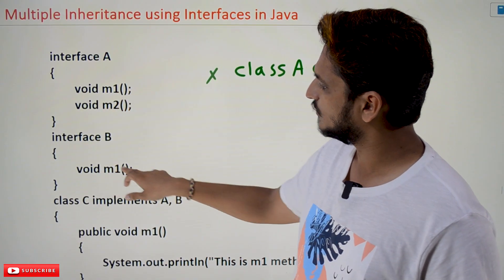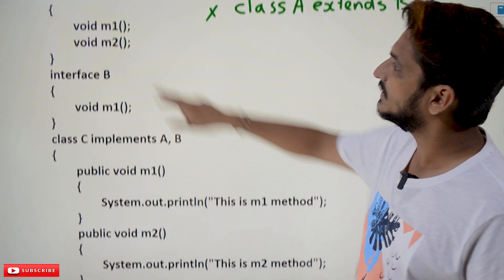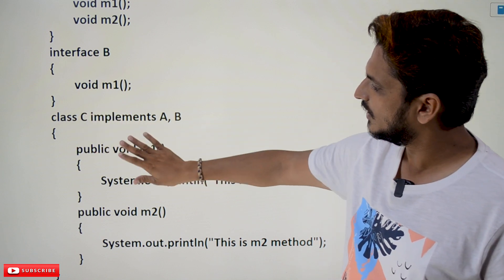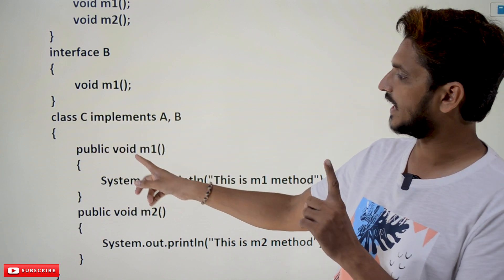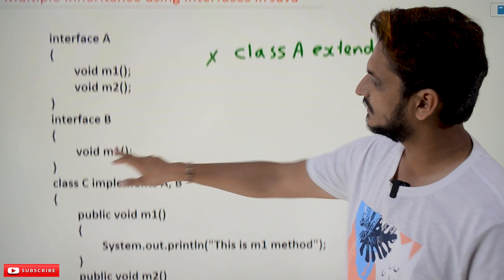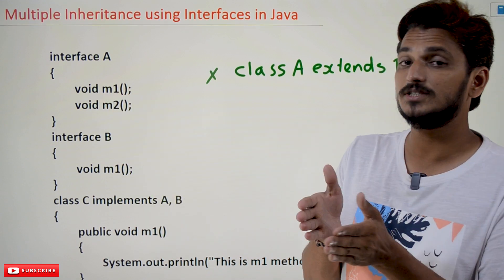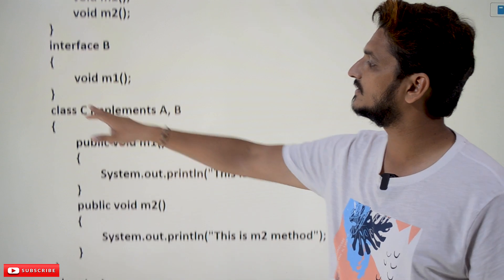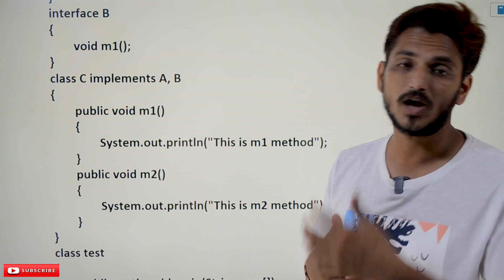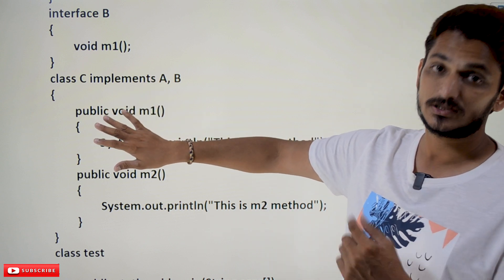We have m1() in both interfaces. When we implement these two interfaces in class C, we implement public void m1() only one time. Even though both interfaces have this method as abstract, the implementation is done in class C only once. That's why there's no conflict about which method to call. This is why multiple inheritance is allowed using interfaces.